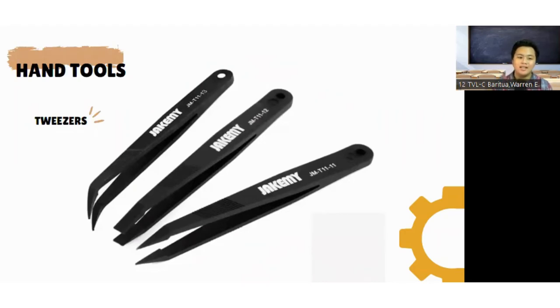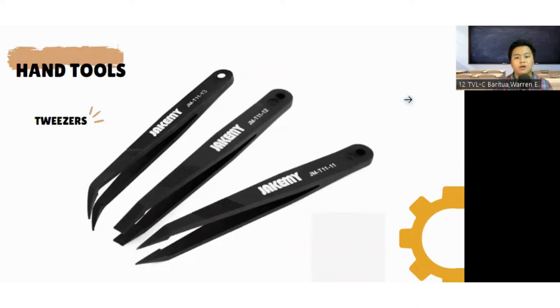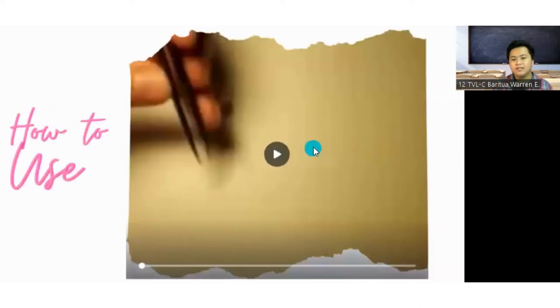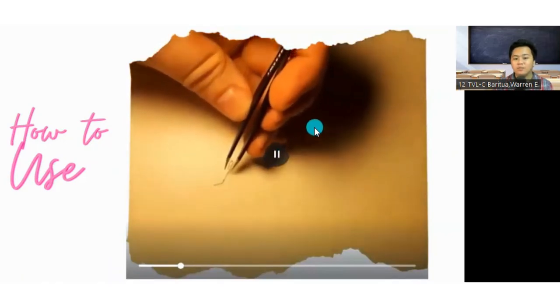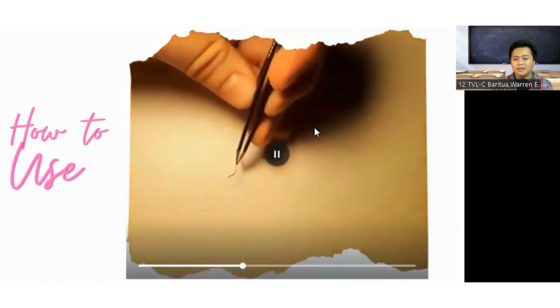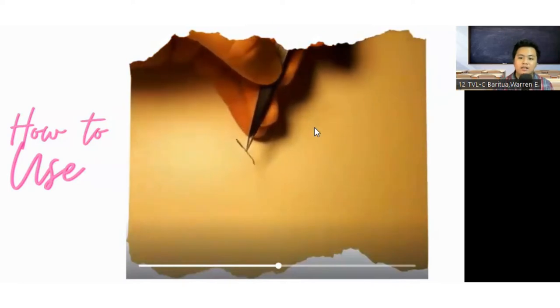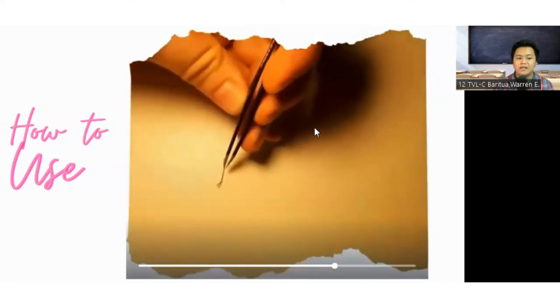Tweezers are hand tools used to grab, handle, or hold small objects or electronic parts which may not be possible to pick up and require position and care. It is an extension of your fingers and they allow us to grab, grip, place, remove, or hold items that are too small or delicate for our fingers to manipulate. The size, shape of the items we grab, grip, place, and hold necessitate the need of variety of tweezers, tip styles, and shapes.